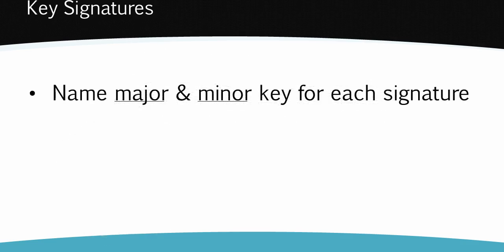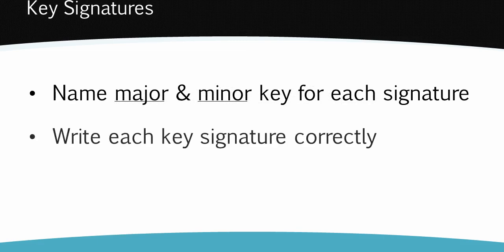You'll need to be able to name the two keys, one major and one minor, shown by each key signature, and you'll also need to be able to write out the key signatures correctly. This means not only putting the right sharps or flats on the stave, but also putting them in the right order and in the right positions on the stave.